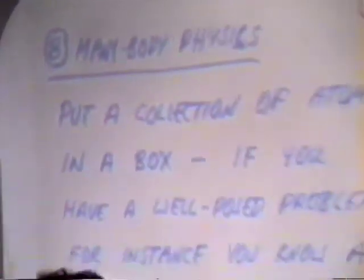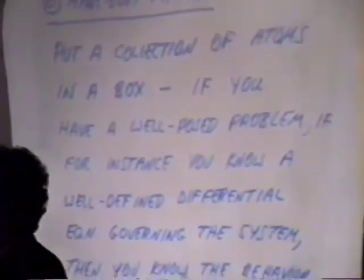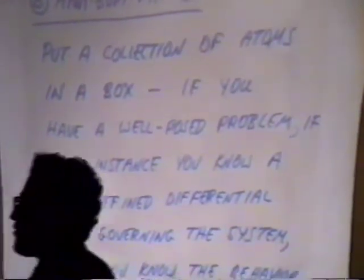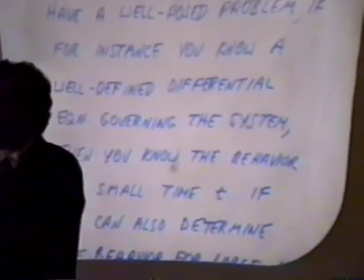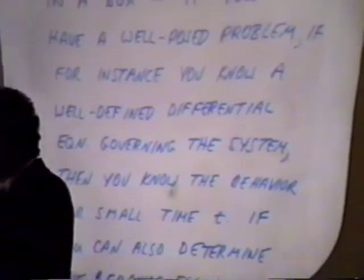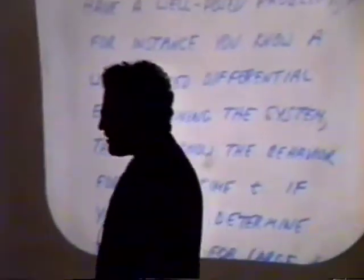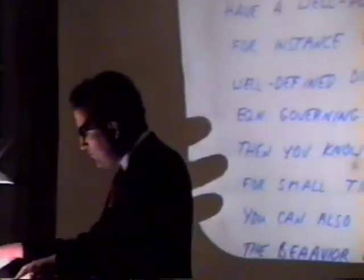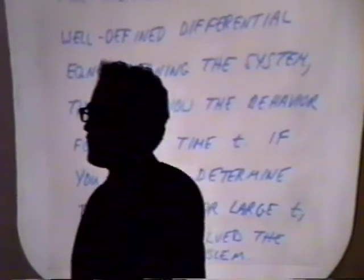Now I'll give a physical analogy, which will be many-body physics. Put a collection of atoms in a box — for instance, atoms of lead at very low temperatures — and we want to know what they do. Suppose this is a well-posed problem in the mathematical sense: that means we know the basic laws governing the system, meaning we have a well-defined differential equation. Knowing how to write a well-defined differential equation means, pretty much by definition, that you know the behavior for small time. If you can also determine the behavior for large time, you say you've solved the problem. In the case of lead, when you put the atoms in a box, the answer is that it becomes superconducting. Superconductivity is a concept that can only be formulated, calculated, or measured by thinking about large times.